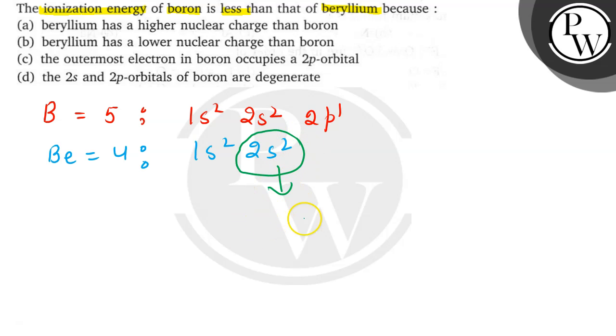the outermost electron shell is completely filled. We can see in beryllium the s subshell is completely filled,